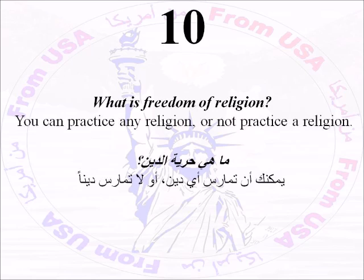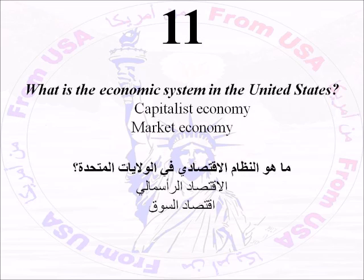Number Ten: What is freedom of religion? You can practice any religion, or not practice a religion. Number Eleven: What is the economic system in the United States? You can say that we have a capitalist economy or market economy.